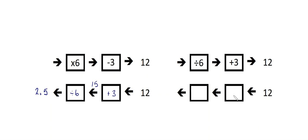What's the inverse? Plus three — minus three. Minus three — it's the inverse of times by six. 12 minus three is nine, nine times six.